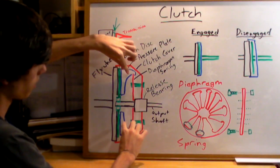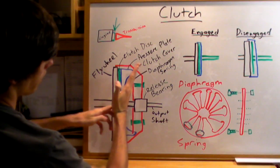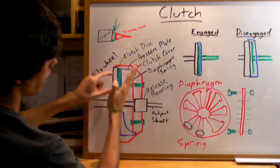So it's going to act as a pivot point here, and when it presses in here, it's going to go like that and pull this blue pressure plate off of the clutch.